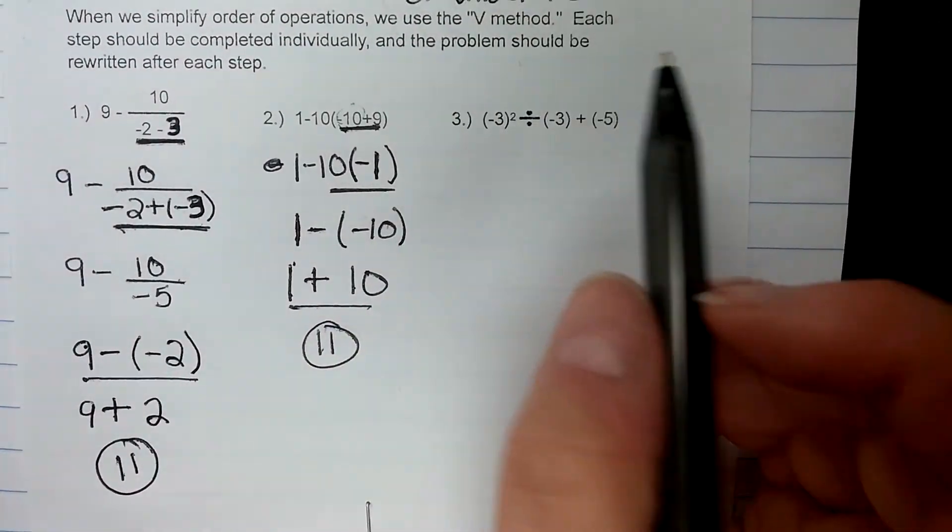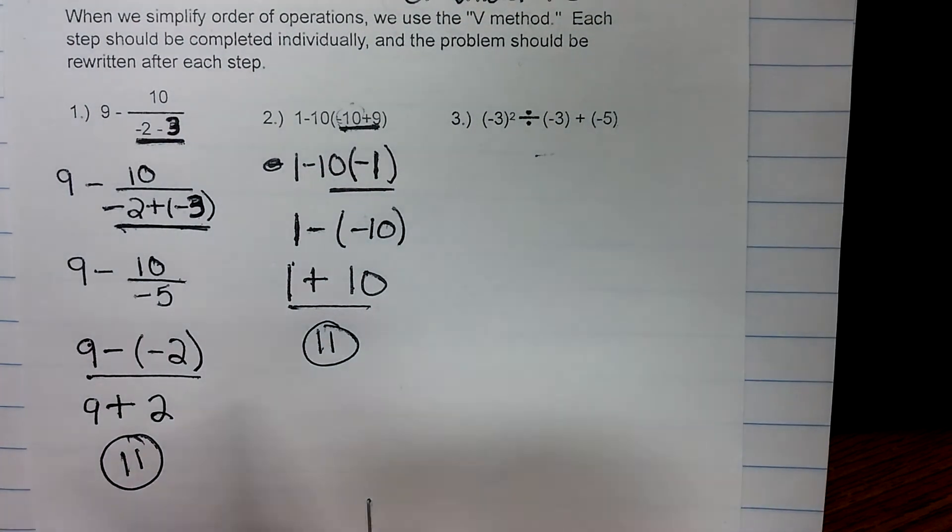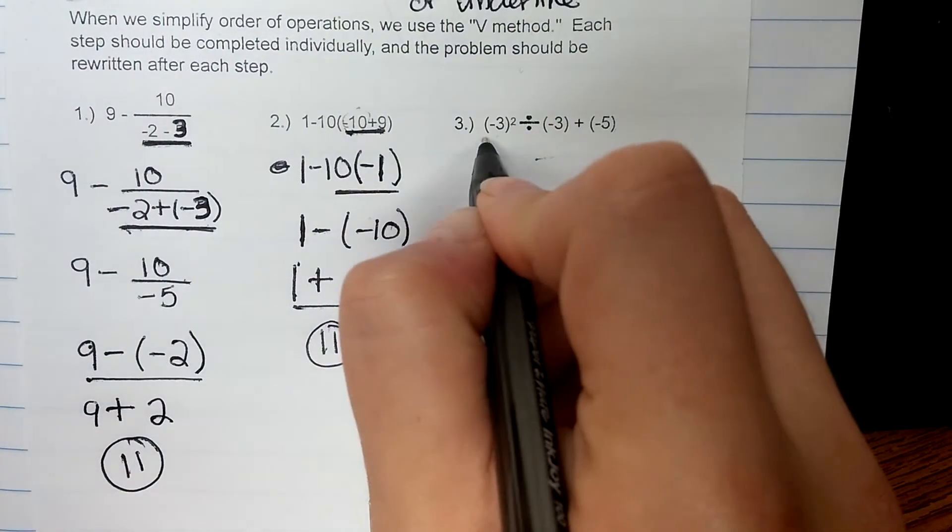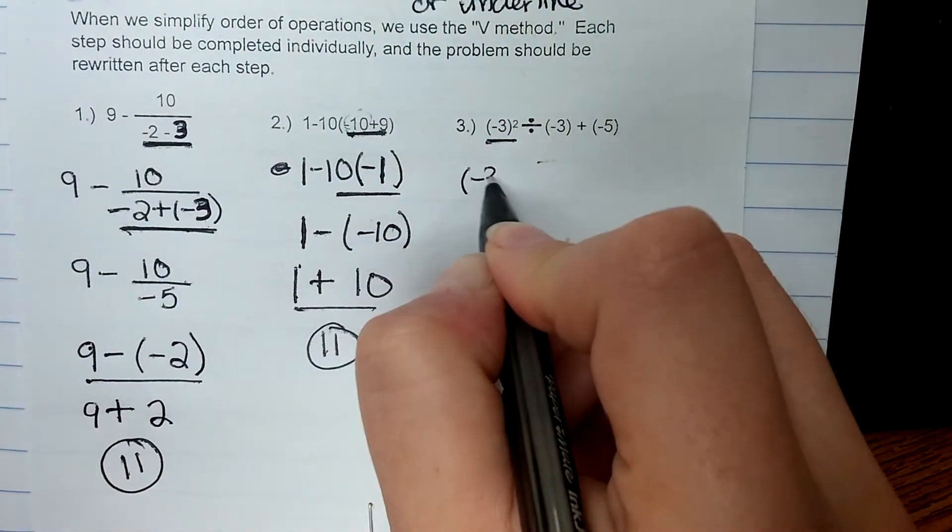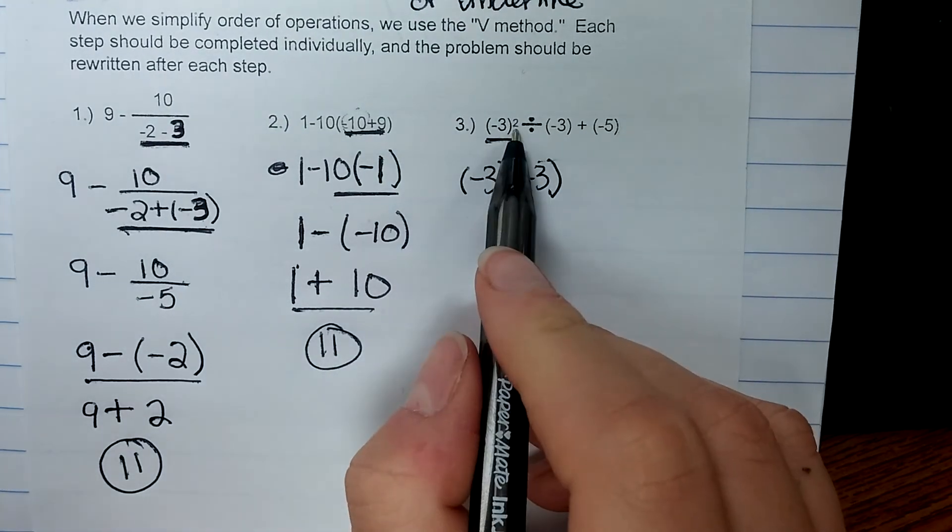All right, last example, number 3. So I don't have any grouping symbols. I'm going to go straight to the exponents. Exponents mean repeated multiplication. So I can write this exponent out as negative 3 times negative 3. It's not negative 3 times 2.